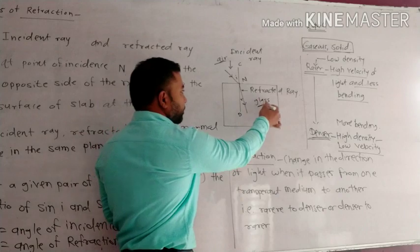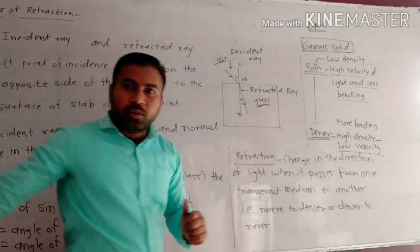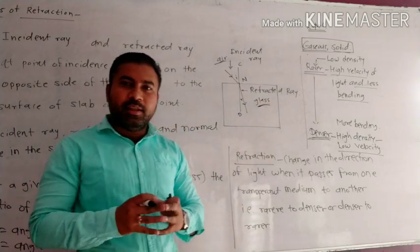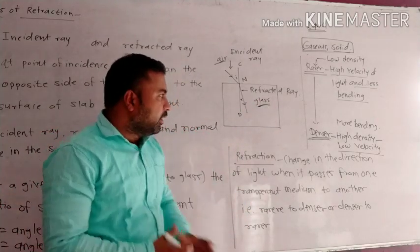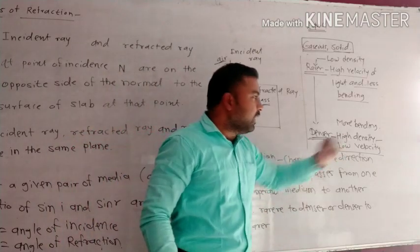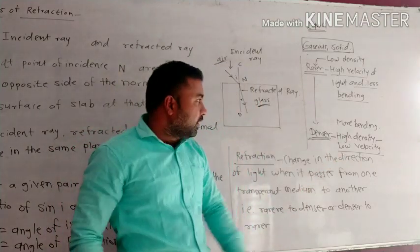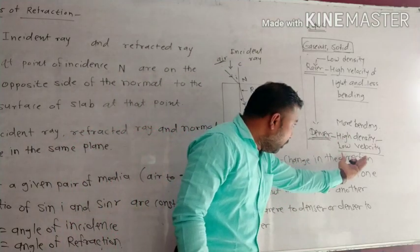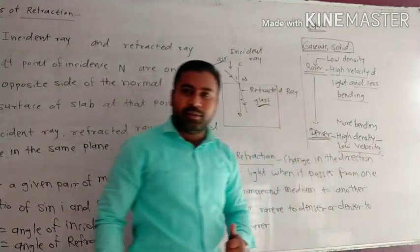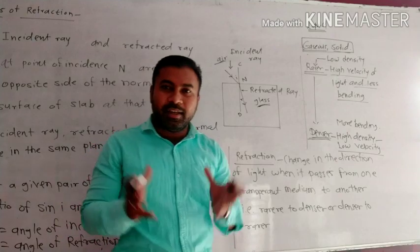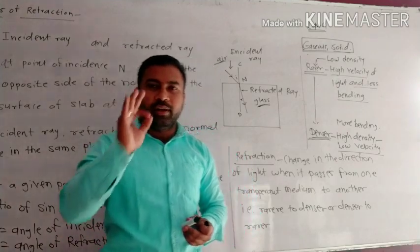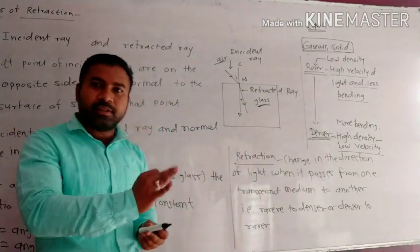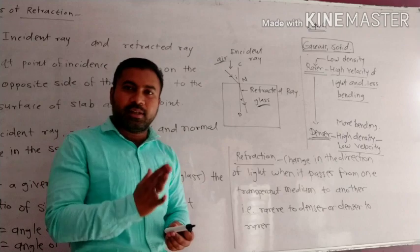Glass is like a solid medium, having high density and low velocity of light. Because of its high density, the velocity of light in glass is less than in air — it is shorter, like a denser medium.